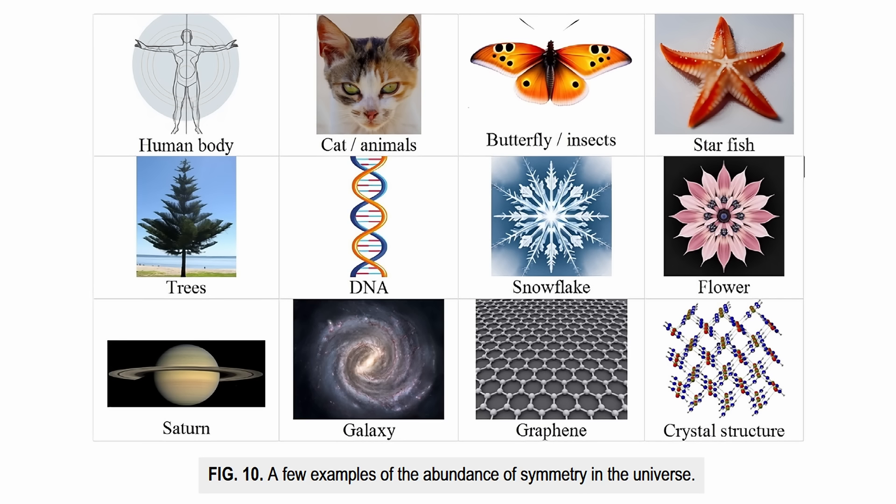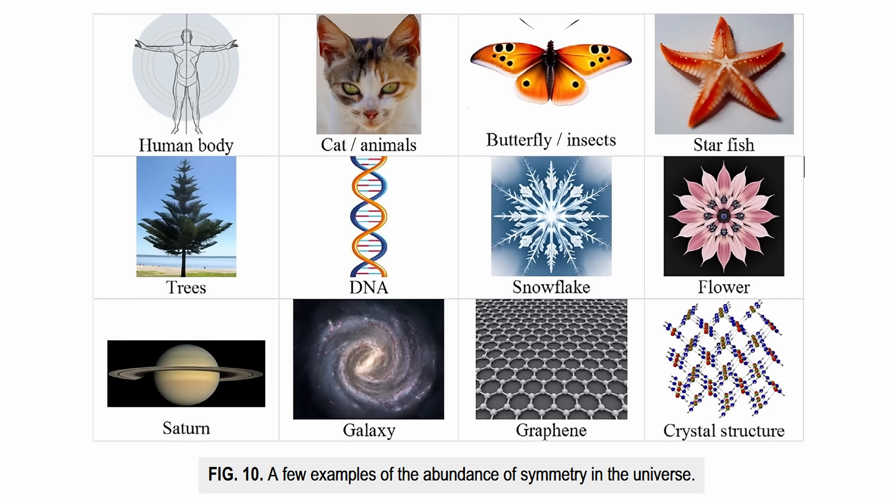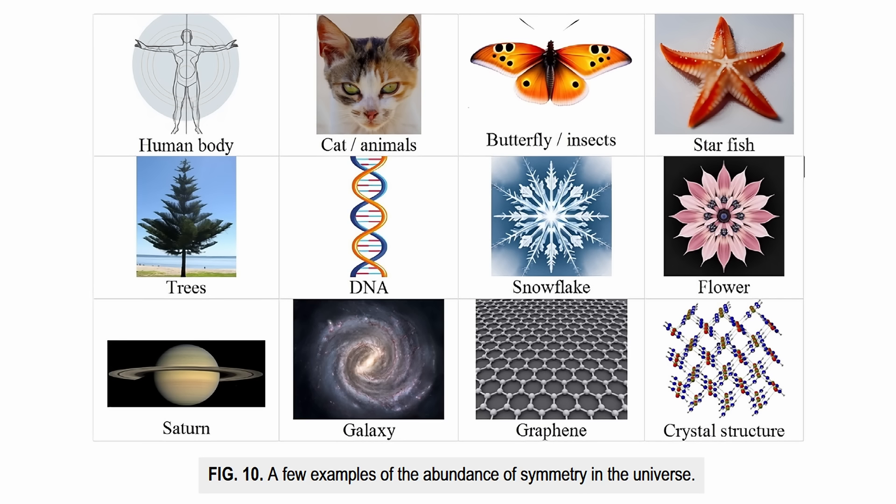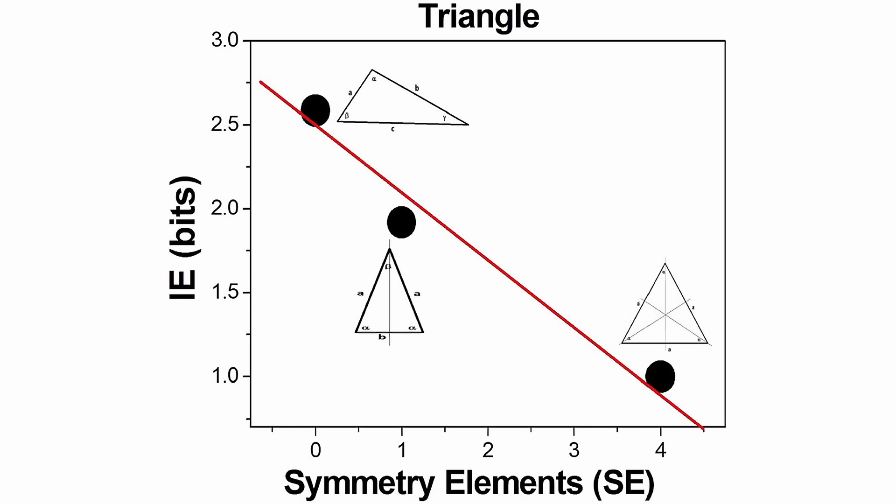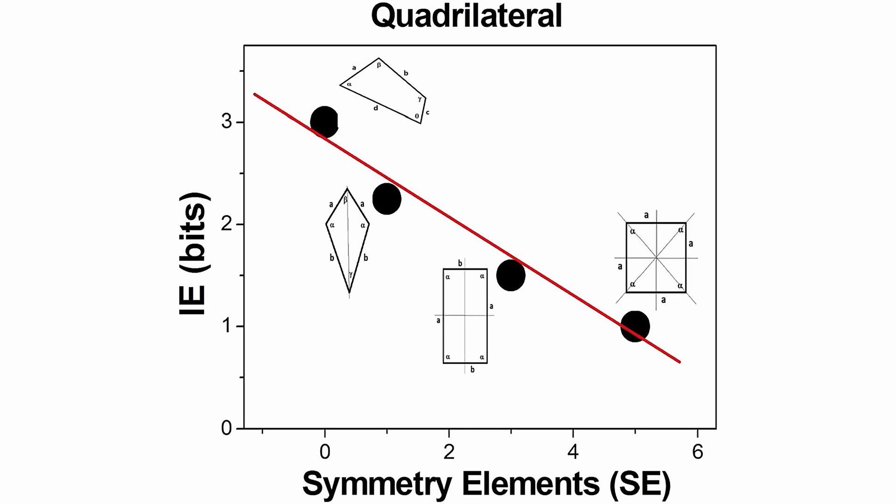From the intricate symmetry of snowflakes to the fundamental symmetries governing the subatomic realm, symmetry manifests at various scales and plays a pivotal role in our understanding of the universe. Until recently, a comprehensive explanation for this phenomenon remained elusive. In their paper, the authors aimed to shed light on this enigma by proposing that high symmetry aligns with a state of lowest information entropy.